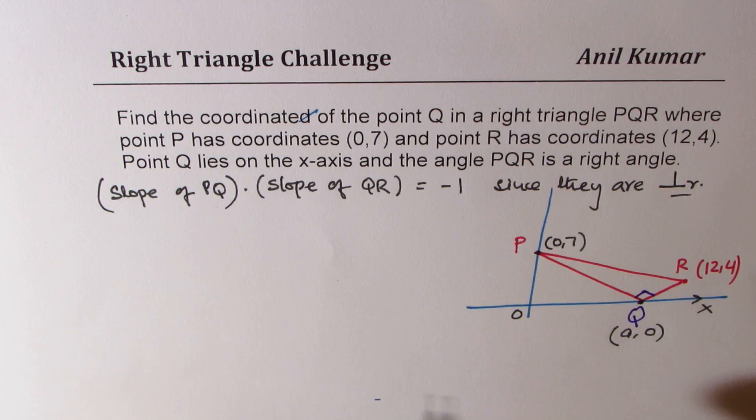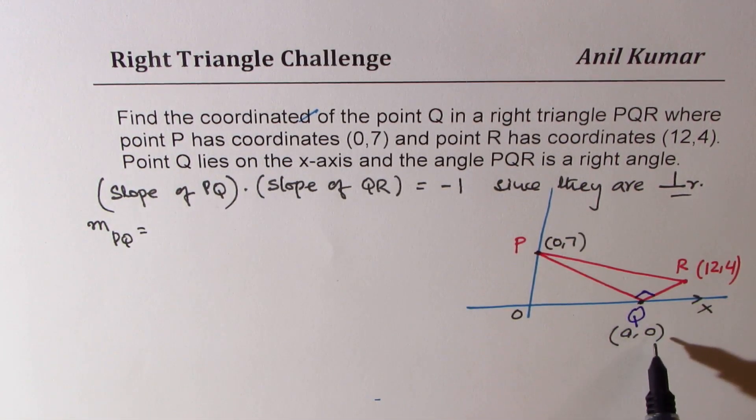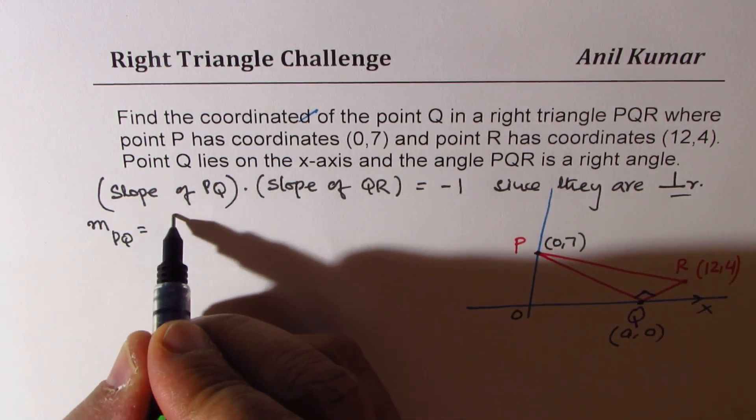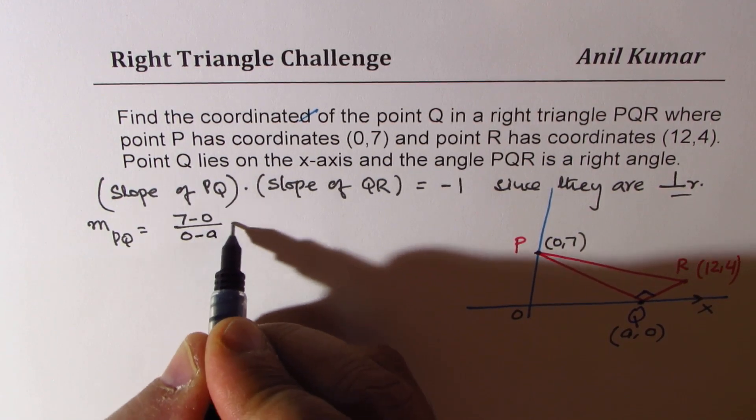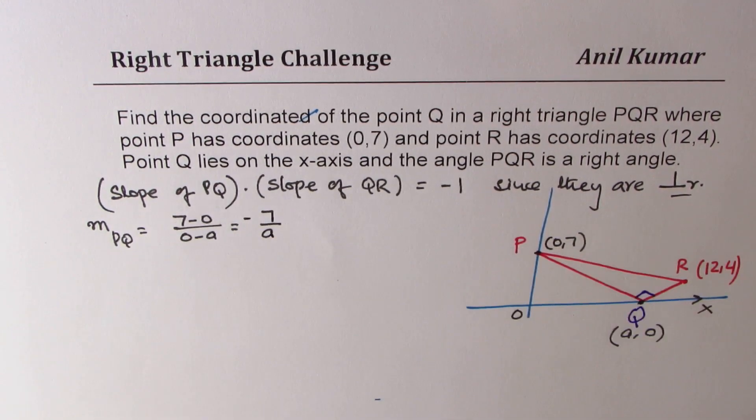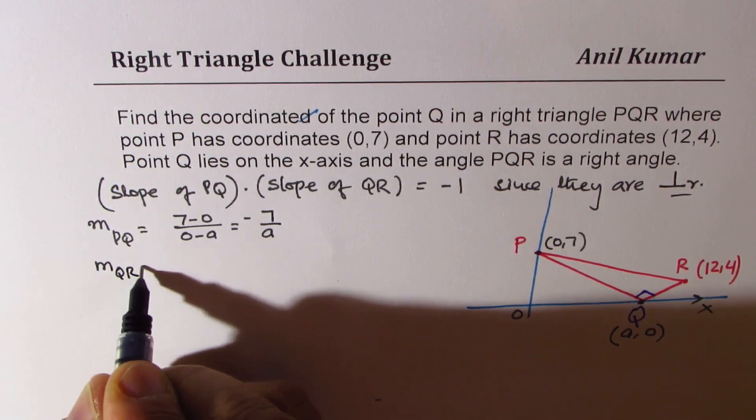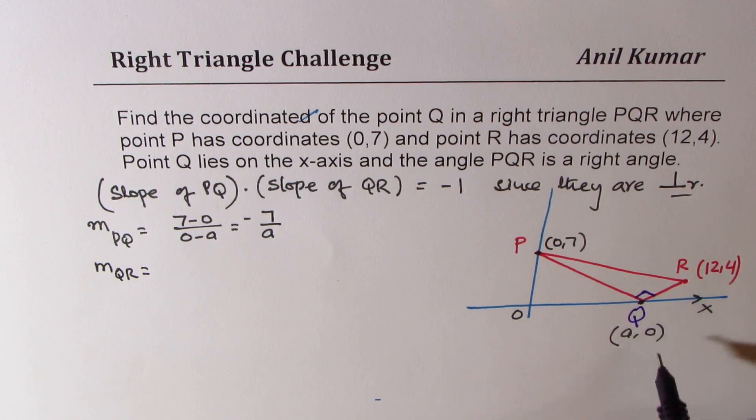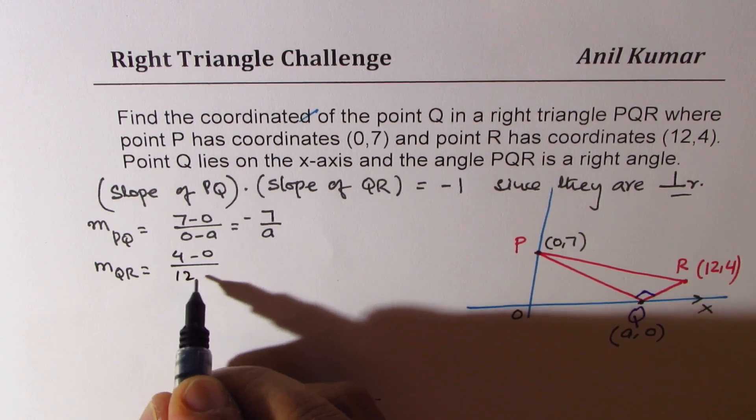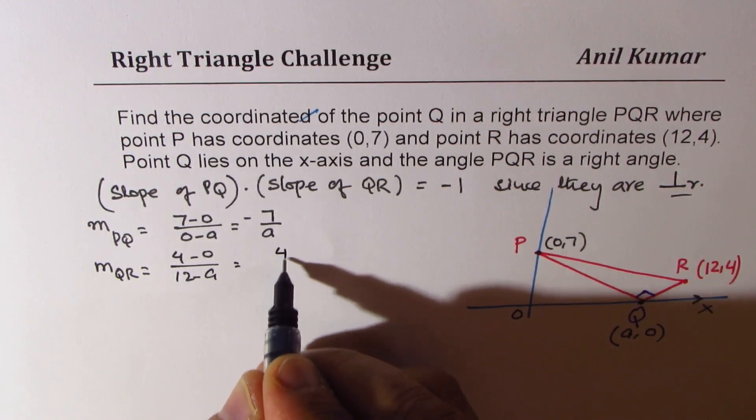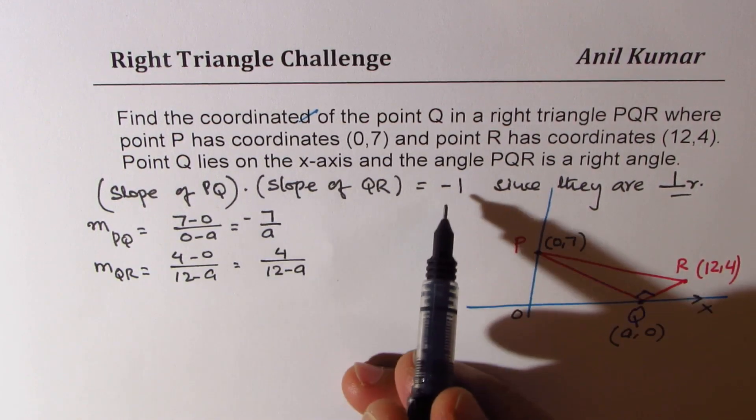So what is the slope of PQ? Slope of PQ will be rise over run. So we can say 7 minus 0 over 0 minus a or 7 over a with a negative sign. Slope of QR will be let's say 4 minus 0 divided by 12 minus a which is 4 over 12 minus a.